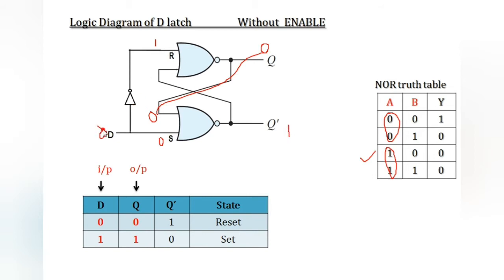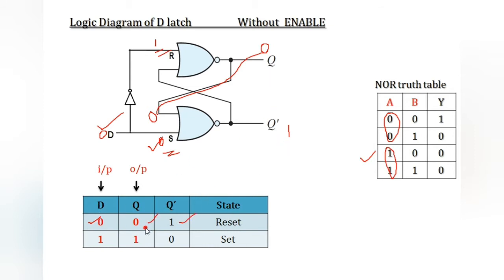D is 0, so S is 0 and R is 1. R is 1 means the output is reset. This is the output and this is the inverted output. D is 0, Q is 0, Q-bar is 1 — this is the reset condition.